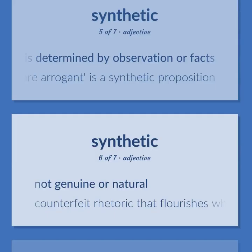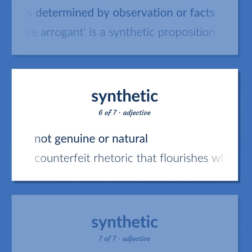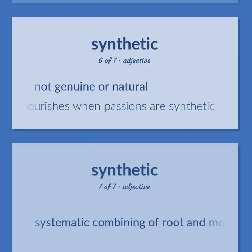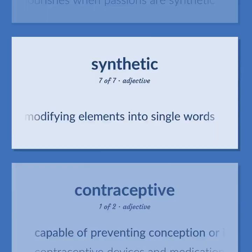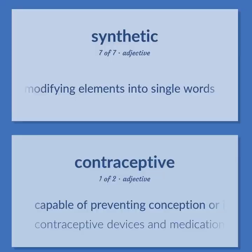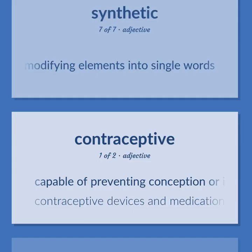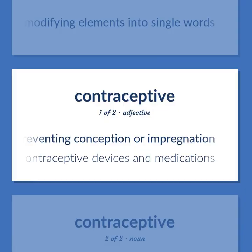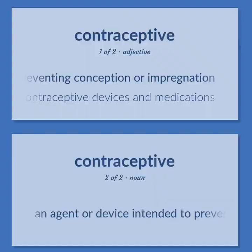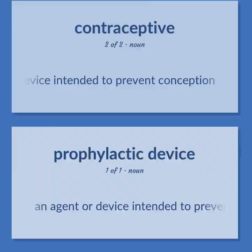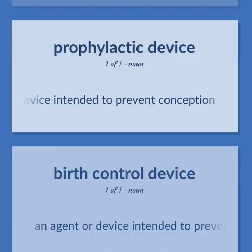Not genuine or natural — counterfeit rhetoric that flourishes when passions are synthetic. Systematic combining of root and modifying elements into single words. Capable of preventing conception or impregnation — contraceptive devices and medications. An agent or device intended to prevent conception.